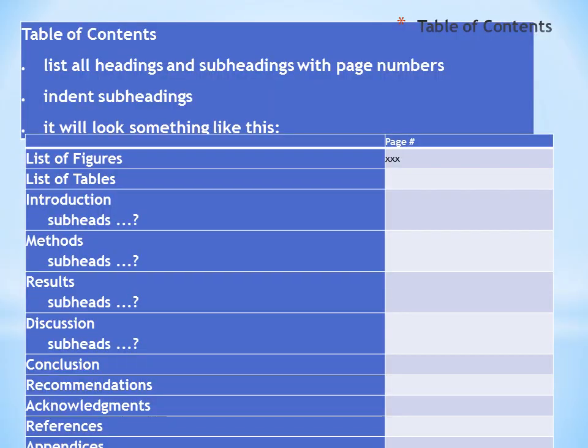The table of contents should include headings, subheadings, list of figures, list of tables, introduction, methods, results, discussions, conclusion, recommendation, acknowledgement, references, and appendices.